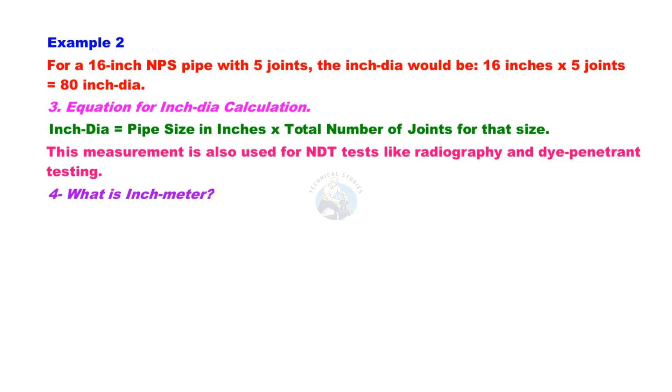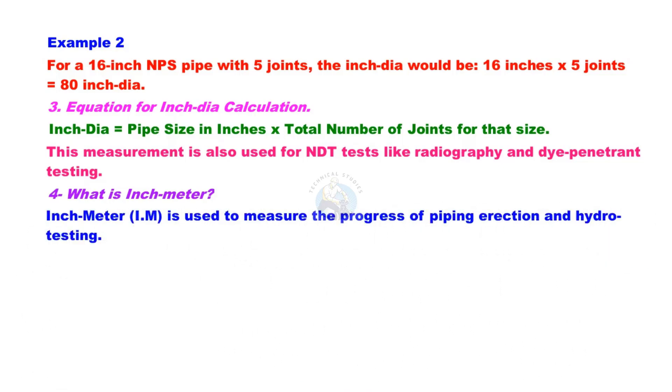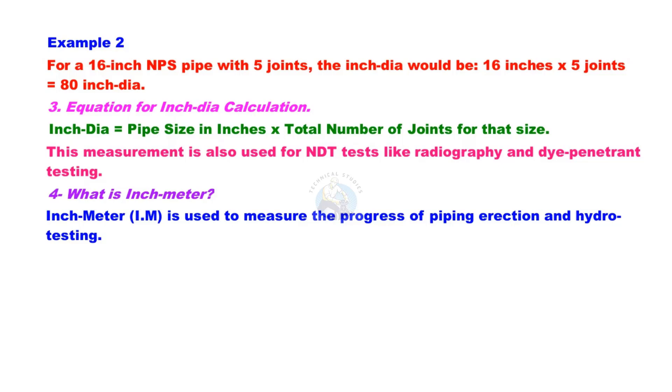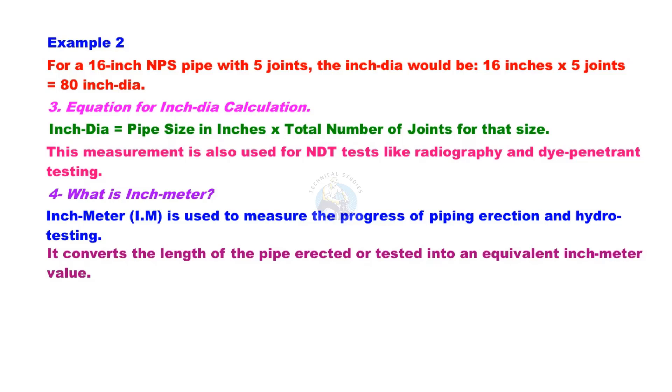What is inch-meter? Inch-meter, or IM, is used to measure the progress of piping erection and hydro testing. It converts the length of the pipe erected or tested into an equivalent inch-meter value.